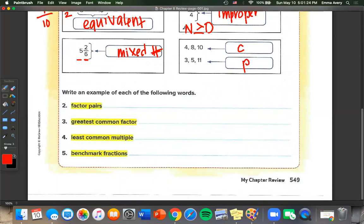Write an example of each of the following words. So for factor pairs I'm going to pick the number 12 and I need to find their factors. So 12 also equals 1 times 12 or 3 times 4 or 2 times 6. And those are our factor pairs.